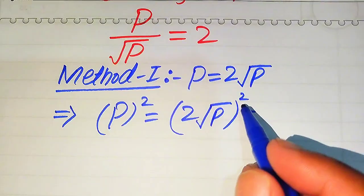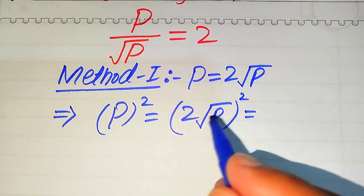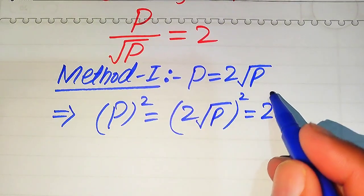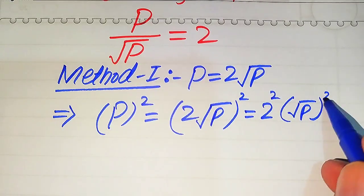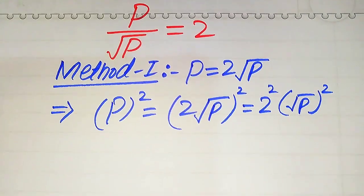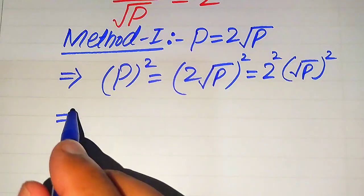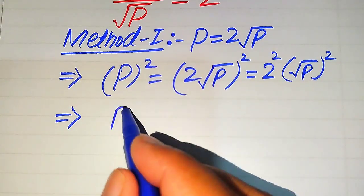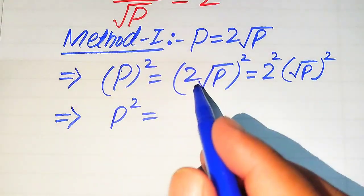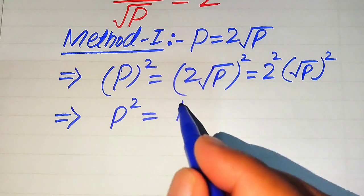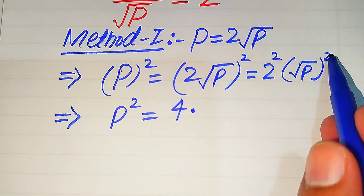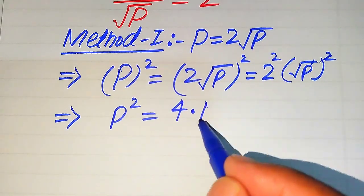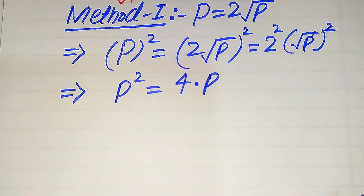On the right hand side we apply the square sign on both terms separately, so it becomes 2 squared times square root of p whole squared. In the next step we have p squared equals 2 squared becomes 4, and the square root of p squared — the square root and the square cancel — and we get p only.